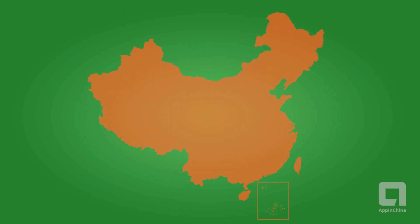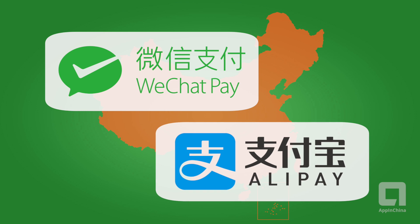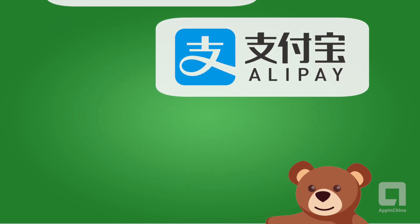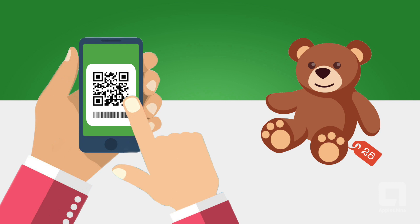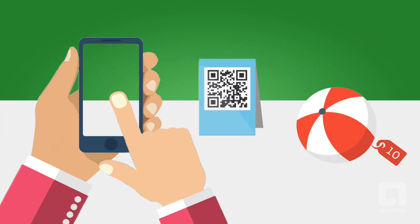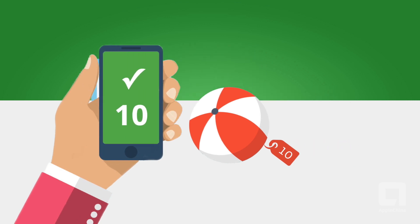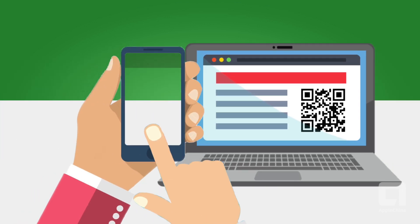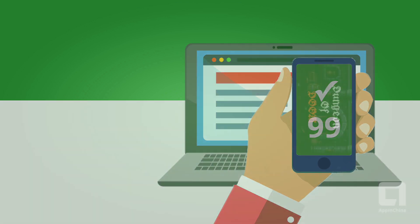Mainland Chinese usually use one of two mobile payment systems: WeChat Pay and Alipay. They each work basically the same. To transmit an instant payment to the payee, you can either present your QR code through the app for scanning by the payee, or you can scan the payee's QR code. Even for website payments, sites will often just generate a QR code for the user to scan.